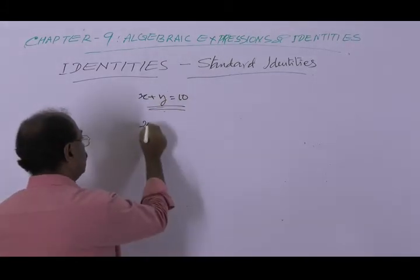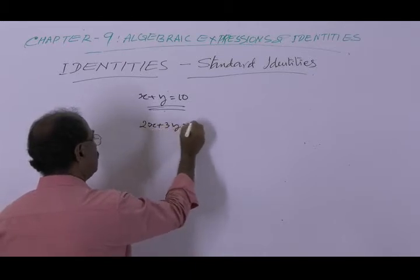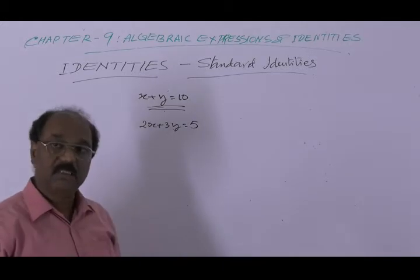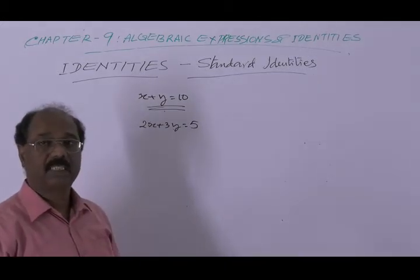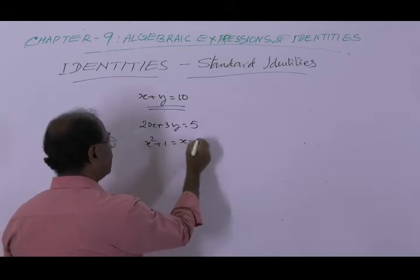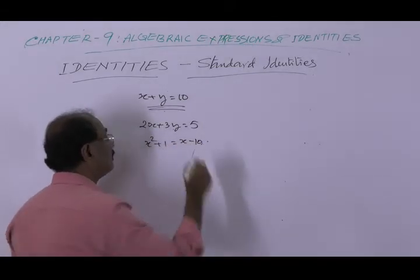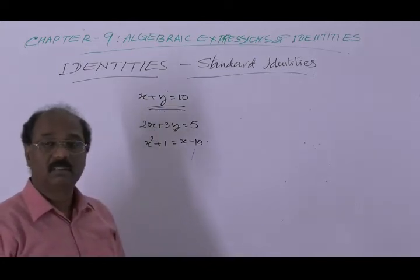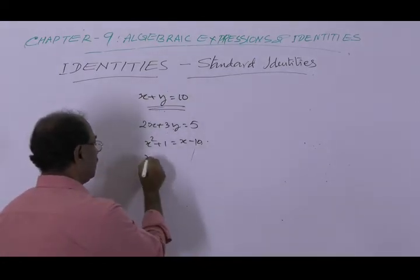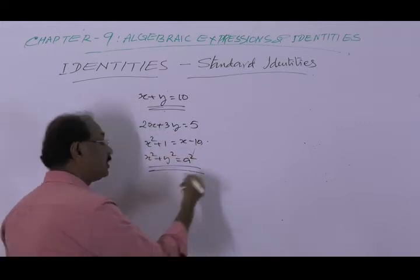2x plus 3y is equal to 5 — it is an equation. x squared plus 1 is equal to x minus 10 — it is an equation. x squared plus y squared is equal to a squared — again an equation.